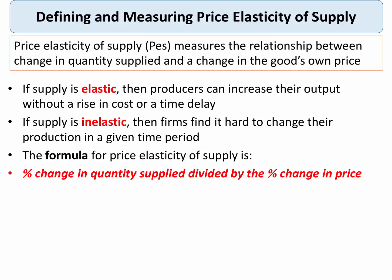Now, depending on the coefficient we get, which we'll come to in a second, if supply is elastic, then producers can increase or expand their output quite quickly without there being an increase in the cost of production or a significant time delay. In contrast, when supply is inelastic, then businesses find it quite tough to increase their production in a given time period. The formula for measuring price elasticity of supply is the percentage change in quantity supplied divided by the percentage change in price.